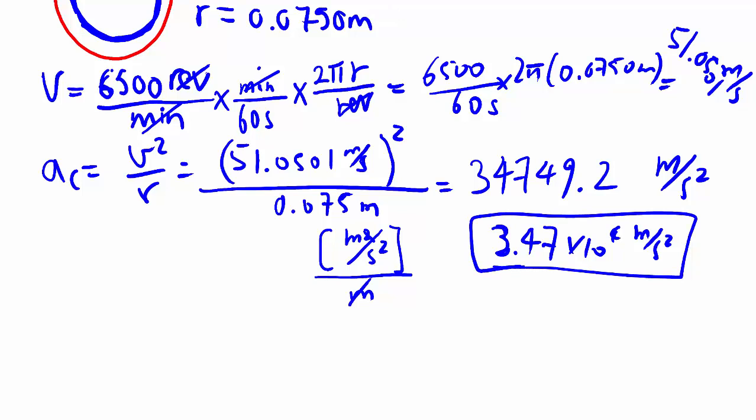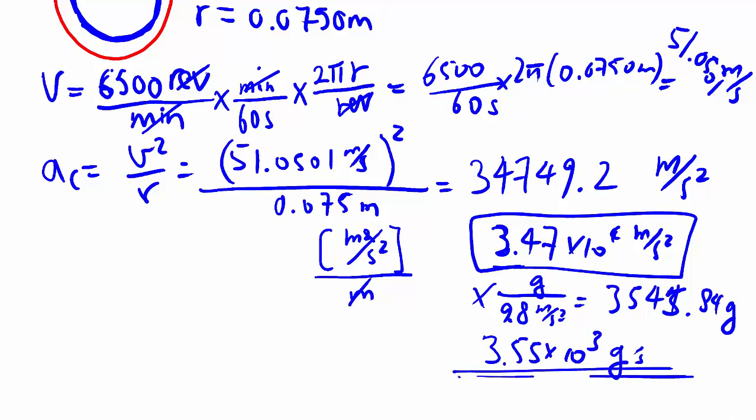The second part they want us to convert this into number of Gs, just to get some sense. But the number is so big, it's hard to get the sense anyways. It works out to be 3.55 times 10 to the 3, so 3000 Gs. Very big acceleration, because you're spinning really, really fast.